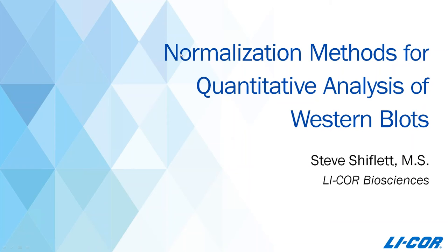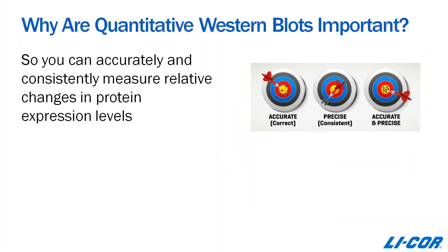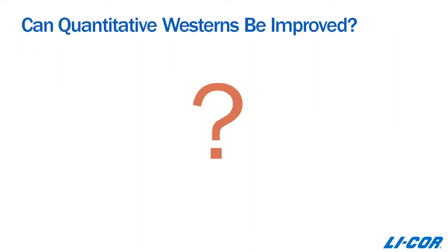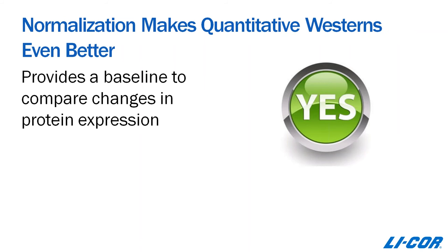Today we'll begin by reviewing some basic terms and definitions, as well as explaining why and how some of these terms and definitions are important. So why are quantitative Western blots important? The purpose is to be able to measure relative changes in protein expression based on a particular treatment or conditions. Normalization is the technique incorporated into the quantitative Western blot process which actually provides a baseline to compare changes in protein expression levels.